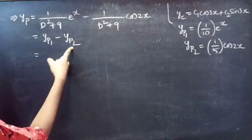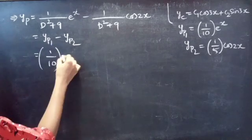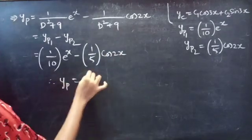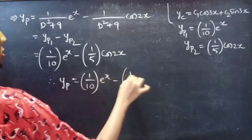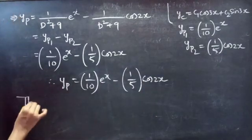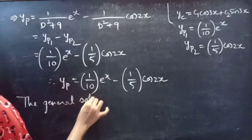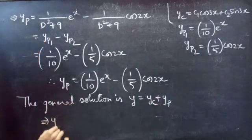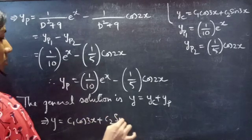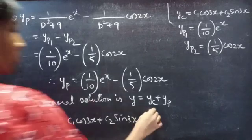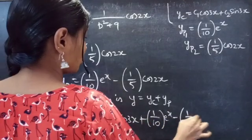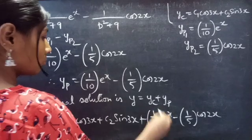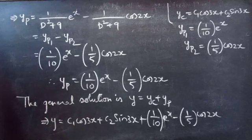Combining, yp = yp1 − yp2 = (1/10)·e^x − (1/5)·cos 2x. Therefore the general solution is y = yc + yp = c₁ cos 3x + c₂ sin 3x + (1/10)·e^x − (1/5)·cos 2x. This completes the problem.